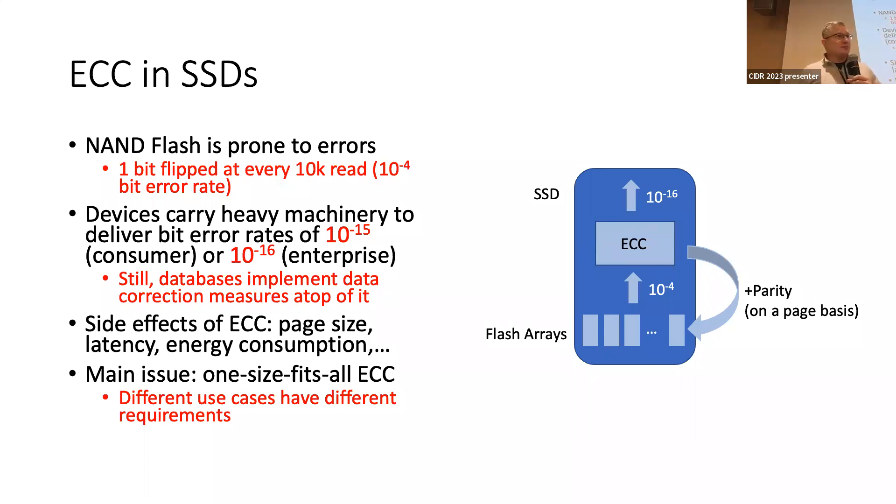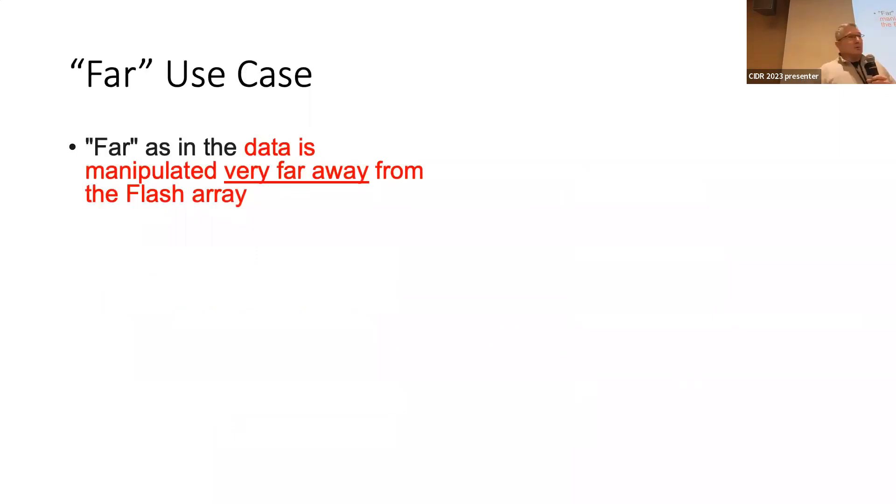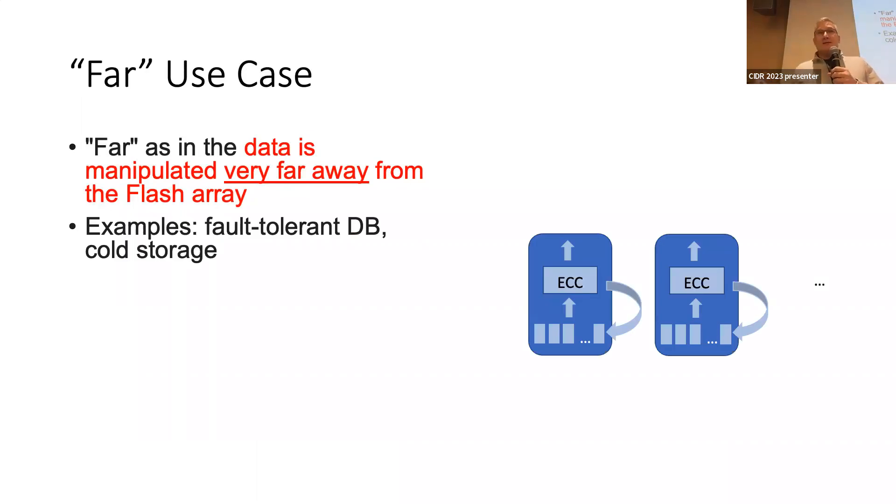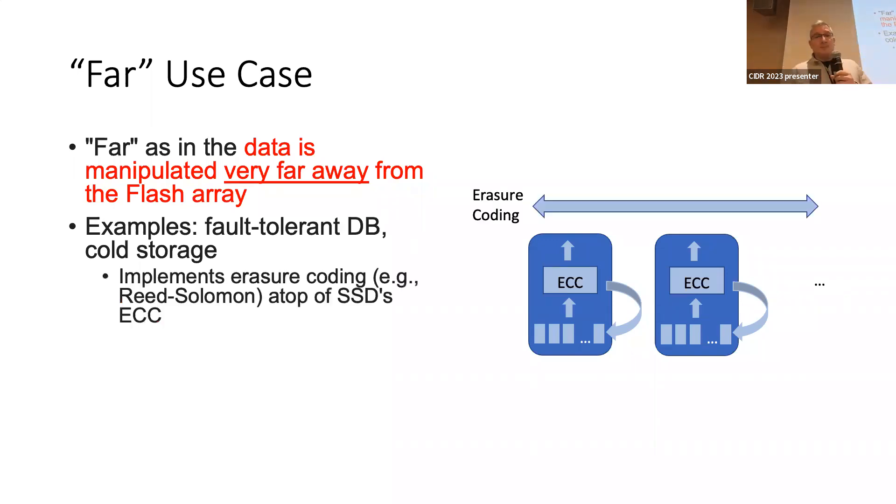I'm going to talk to you very briefly about two of these cases. One we call far, and we call it far because in this particular case, the data is going to be operated very far away from the NAND arrays where it is stored. Examples of this are databases with fault tolerance capacity or a cloud storage service in which you're going to scatter data across several SSDs to account for the fact that some of them may not be available.